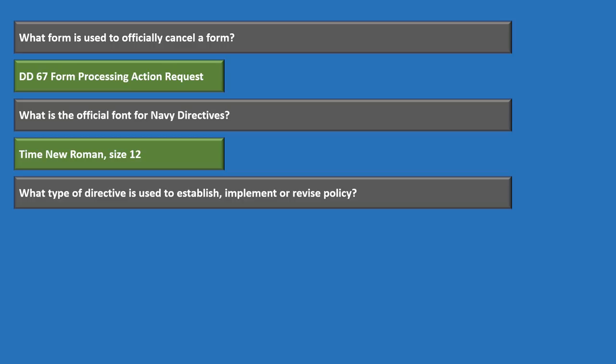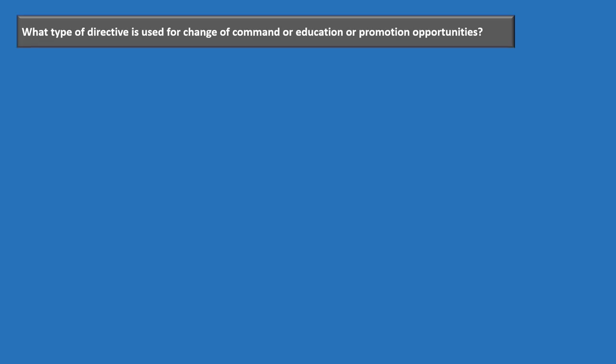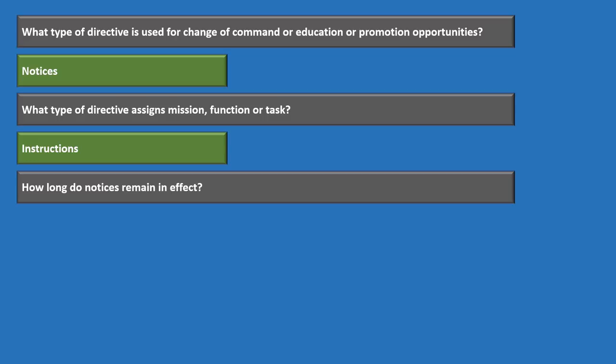The type of directive used to establish, implement, or revise policy is the instruction. The type of directive used to establish or change organizational structure is a notice. Notices are also used for change of command or educational or promotional opportunities. Instructions are used to assign mission, function, or tasks.